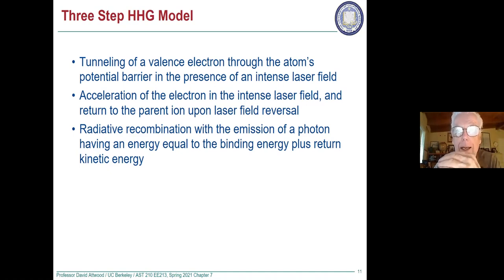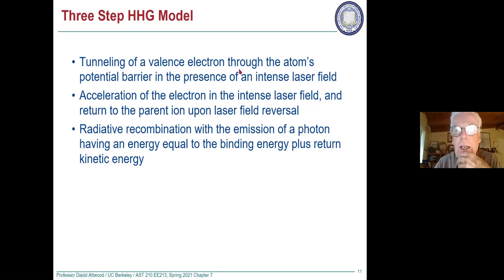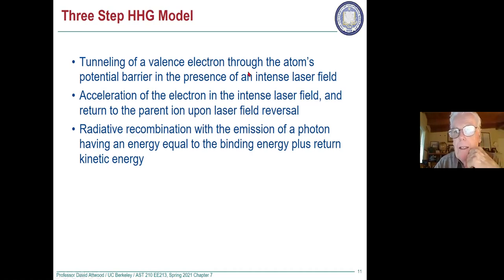You don't want it to be exactly comparable to the binding electric field from the shielded nucleus. That's the first step — get the electron out. The mathematical model is that just at the instant it gets out, which we call the birth of the free electron, its initial velocity is zero.